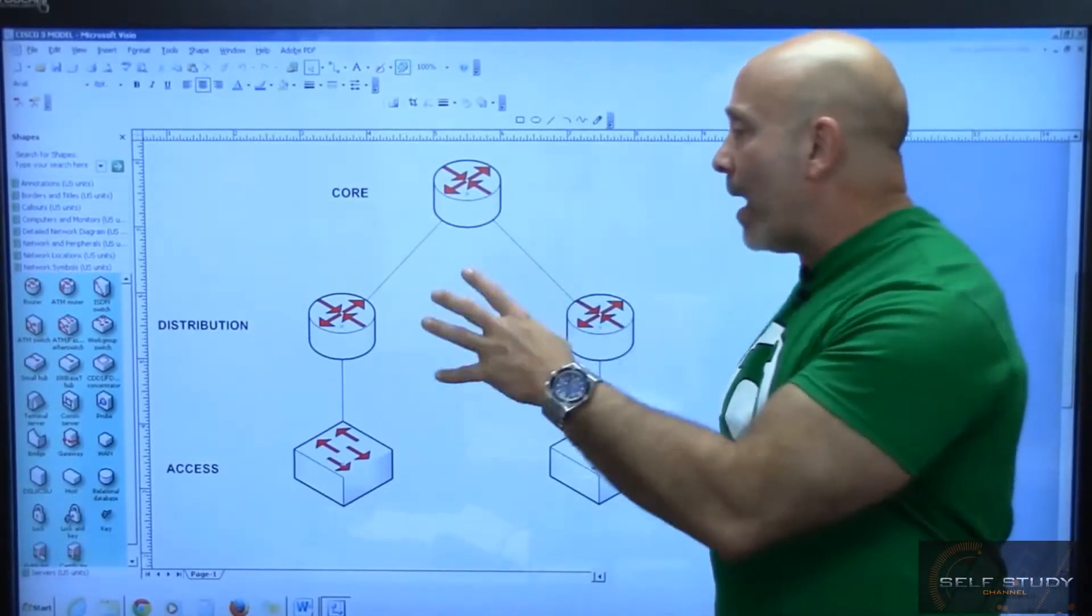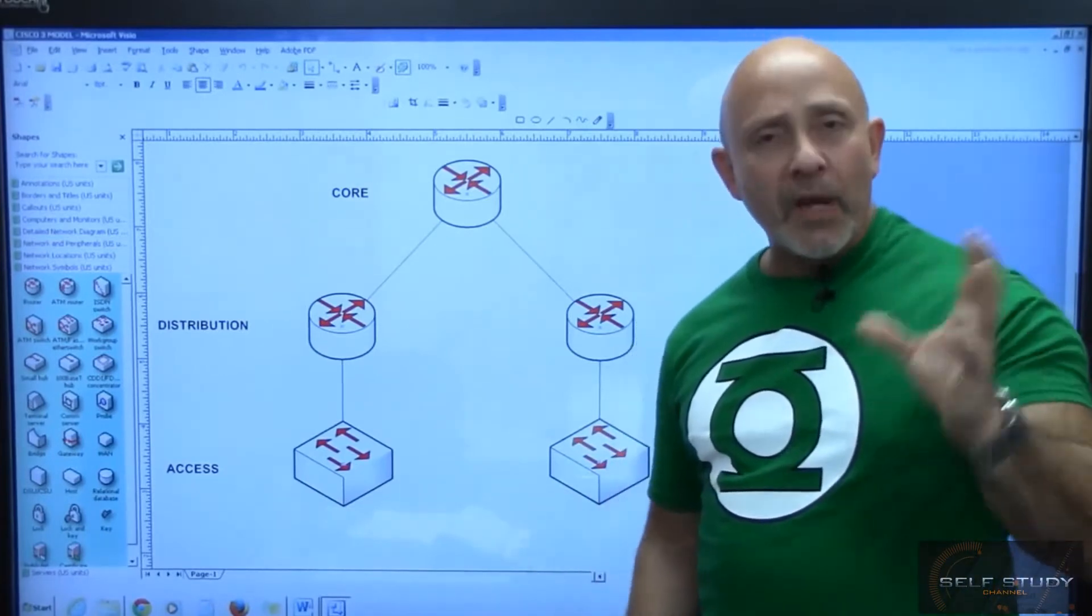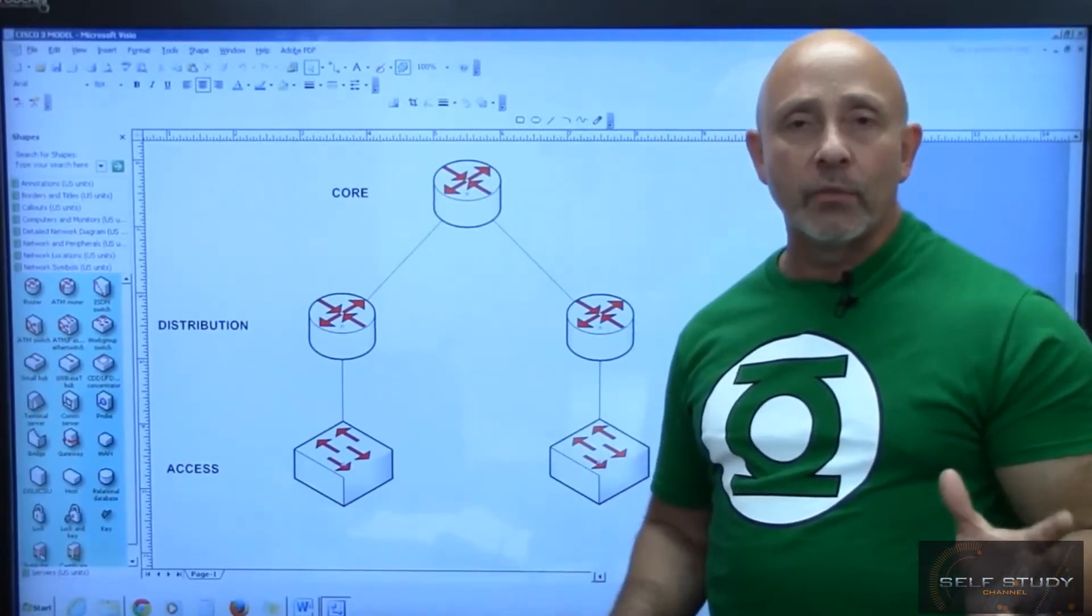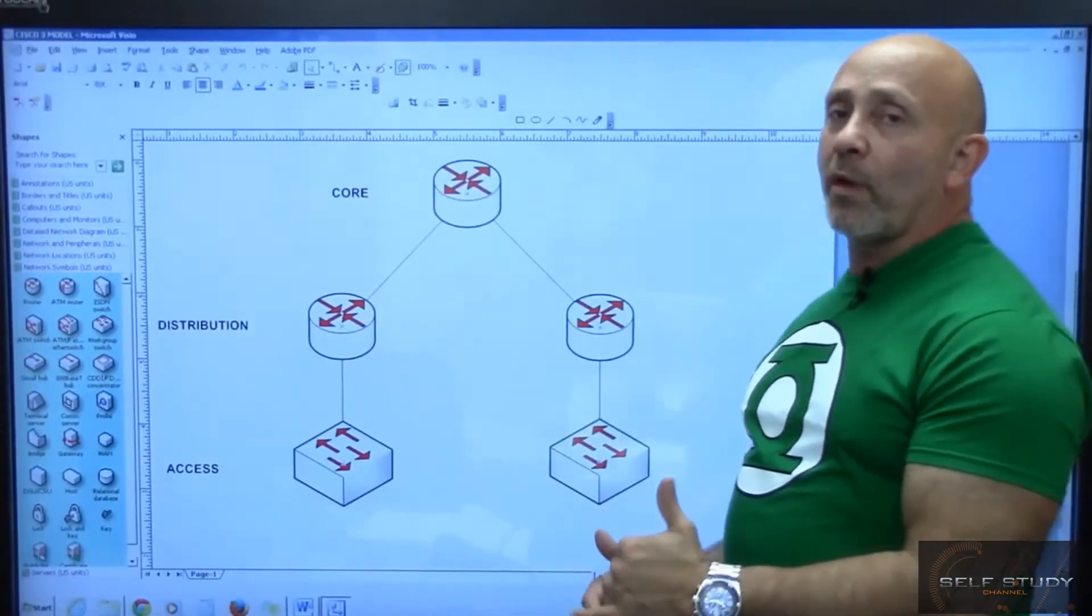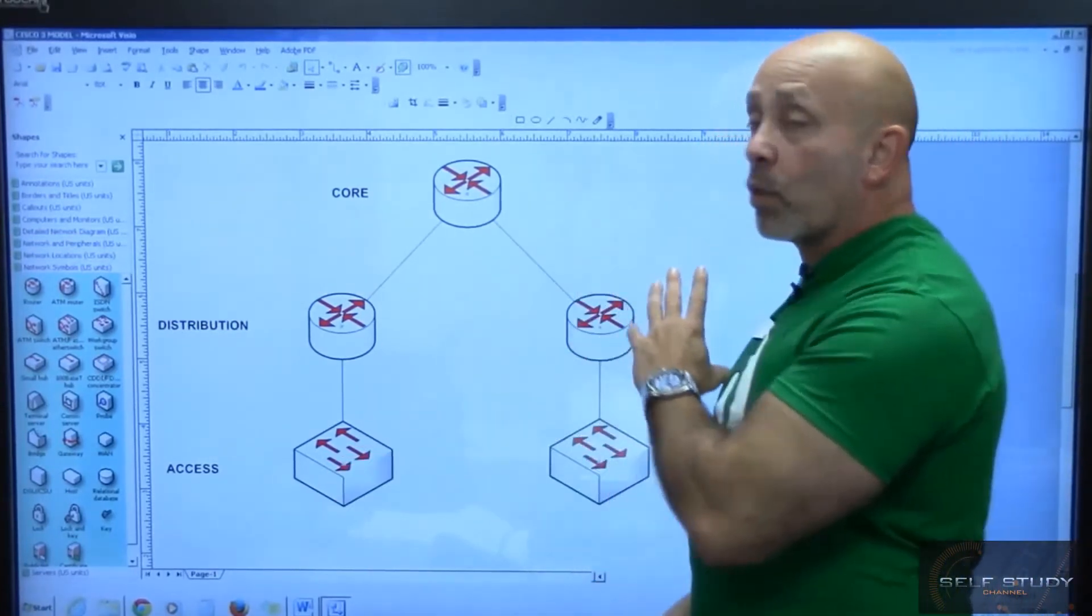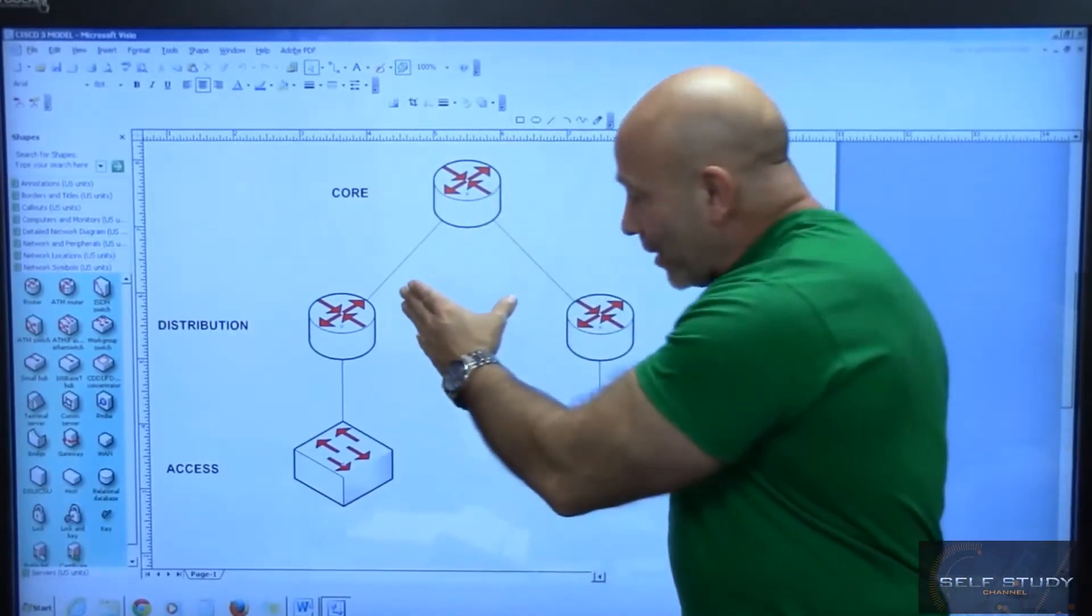But as for the distribution layer, the one that's making the deciding factor—hey, does this really need to go to the core or can I route it some other way? Remember that rule: 80% of all traffic should be local to your segment. This somewhat applies here as well.